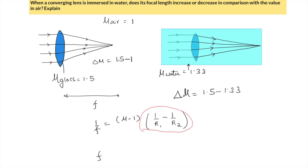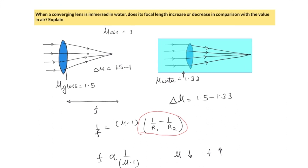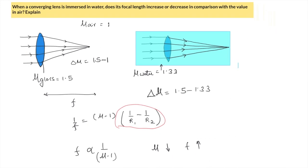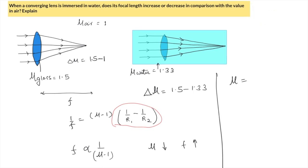Focal length is inversely proportional to (μ - 1). So if this μ is decreasing, focal length will increase. And why is it decreasing in this case? Because now we are going to look at the relative refractive index of the lens with reference to the other medium.